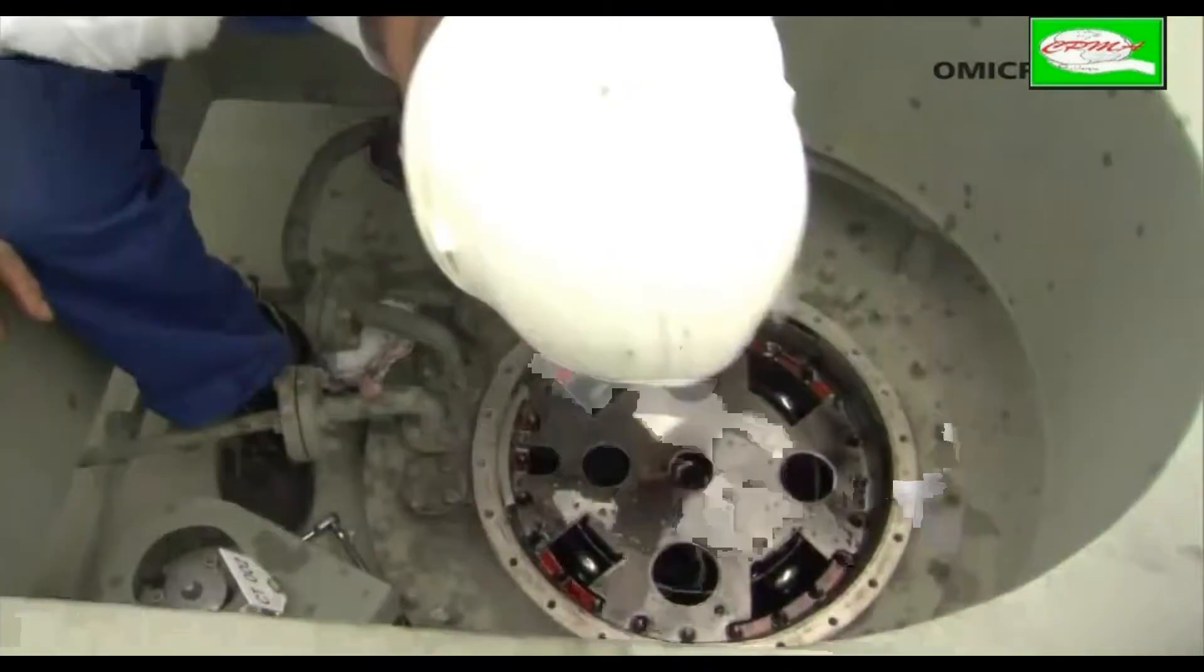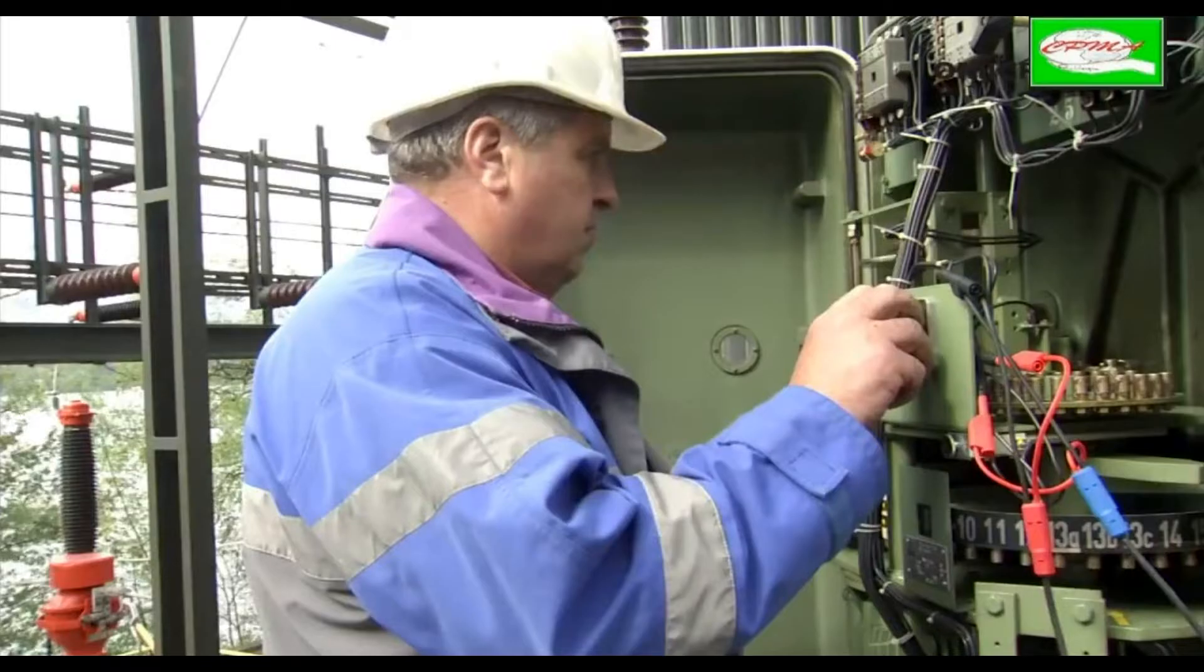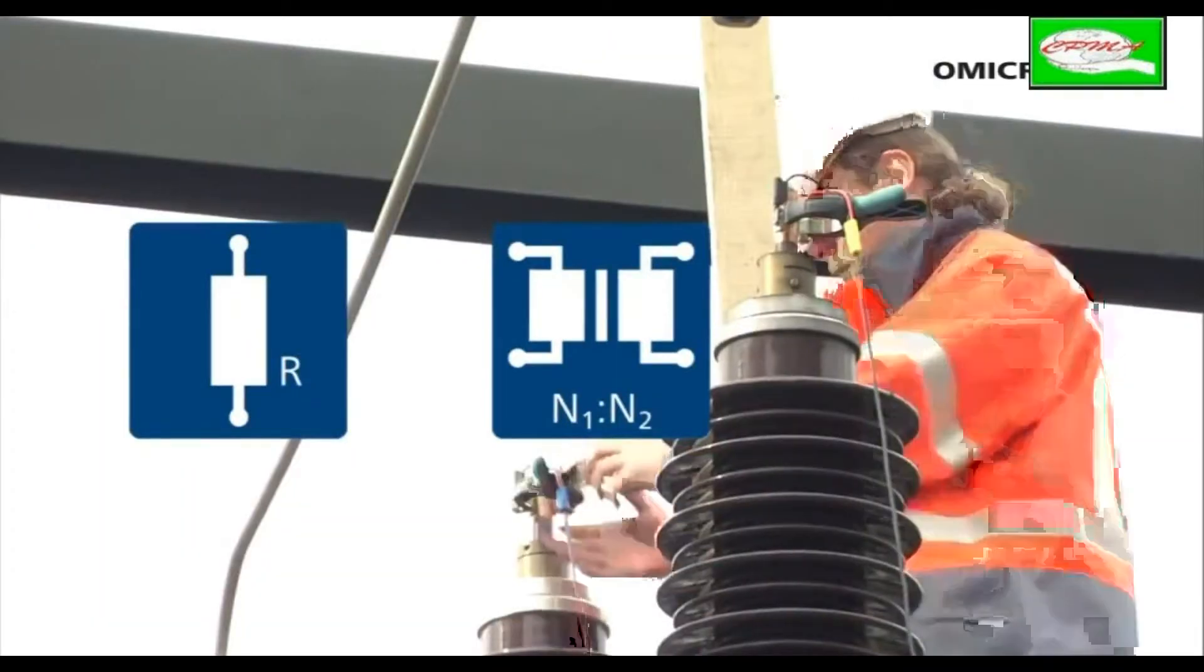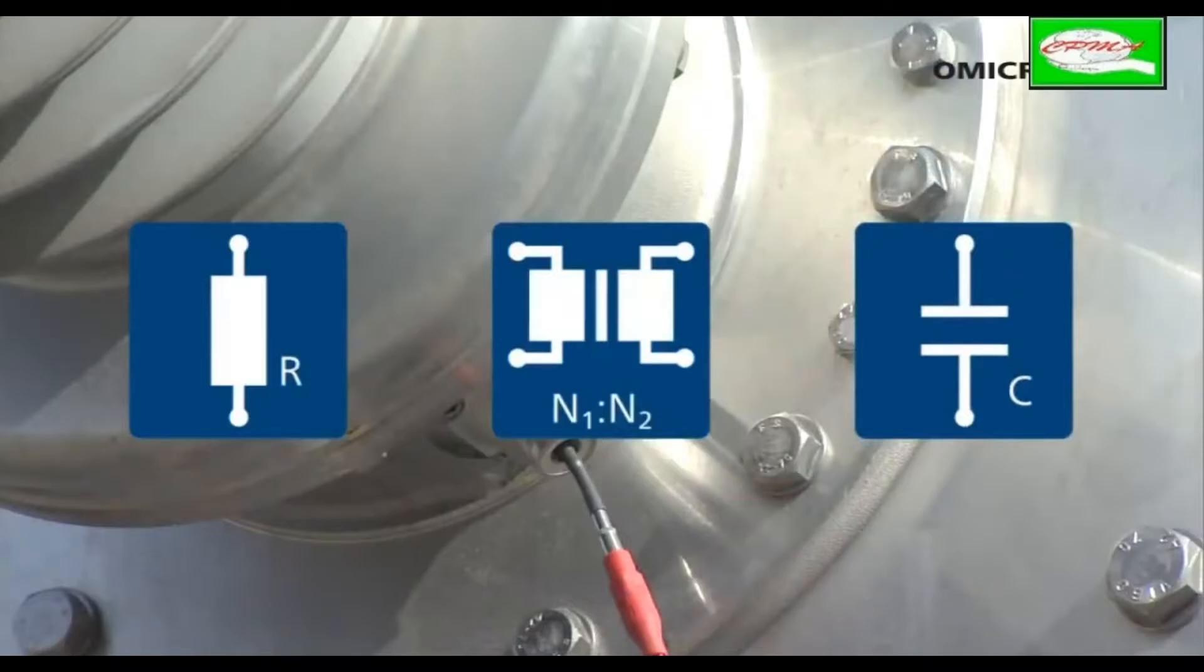Os métodos elétricos mais comuns incluem medição de resistência de enrolamento e checagem do comutador, medição da relação do transformador e corrente de excitação, e medição da capacitância e fator de dissipação ou fator de potência.